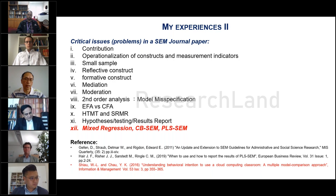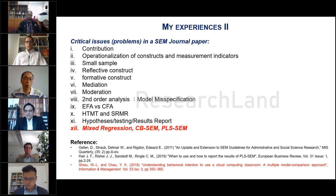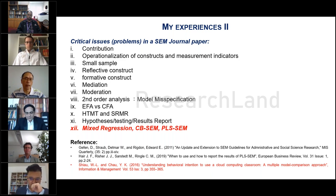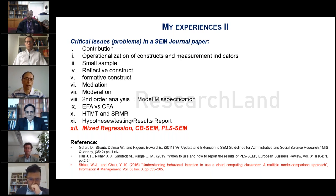The third issue is small samples. As I mentioned, small samples may be acceptable for smaller populations, but you must collect a bigger one. For confirmatory analysis, it is better to have more than 100 observations or at least 10 times the number of indicators as a rule of thumb.